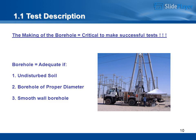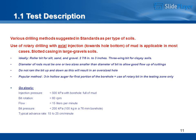The making of the borehole is critical to making successful tests. A borehole is adequate if: (1) the soil is undisturbed, (2) the borehole is of proper diameter, and (3) the borehole wall is smooth. Various drilling methods are suggested in standards depending on the type of soils. Use of rotary drilling with axial injection toward the hole bottom with mud is applicable in most cases. Slotted casing is used in large gravel soils.